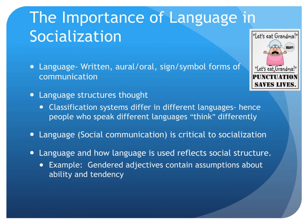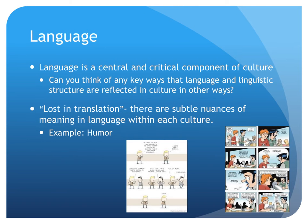Language tends to reflect social structure. For example, gendered adjectives contain assumptions about ability and tendency. Language and culture are intertwined — language is a central and critical component of culture. The expression 'lost in translation' captures the fact that when you try to translate things from culture to culture, some things really just don't translate. Humor is a good example — jokes from other cultures often just don't translate, and neither do yours to their language.